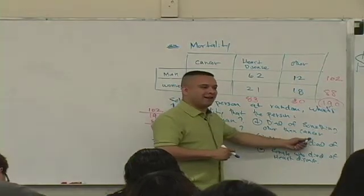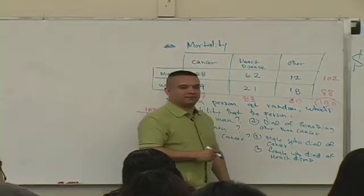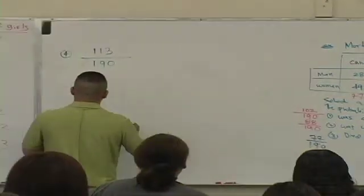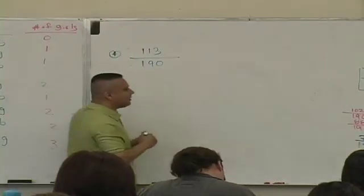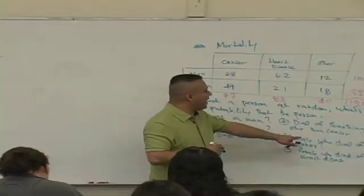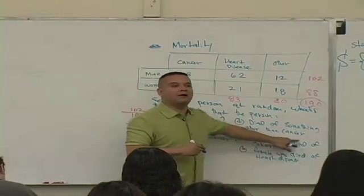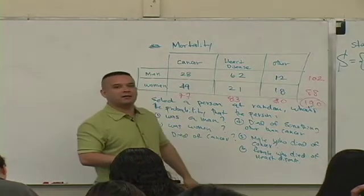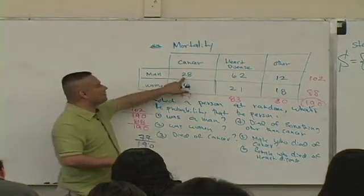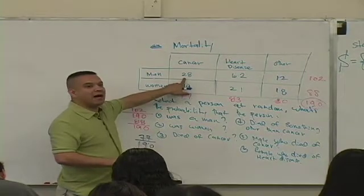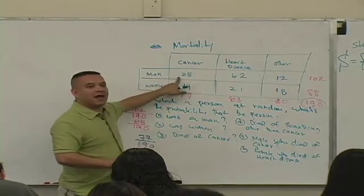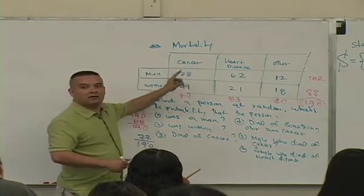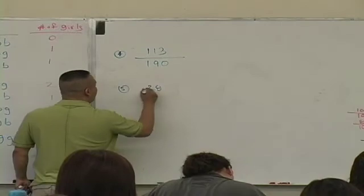And what? Cancer. What does number five say? Five is that you are what? You are a male who died of what? Cancer. A male who died of cancer. So what does that mean? Now there's reference to sex. So you've got to be a guy, and you've got to have died of what? Cancer. How many? 28. 28 over what?